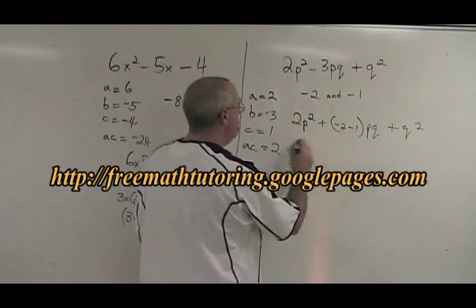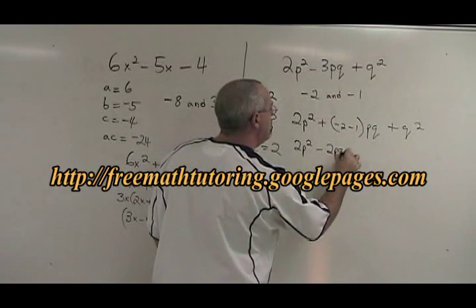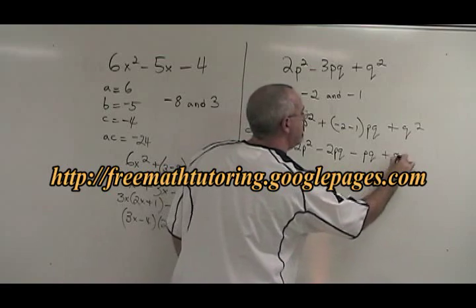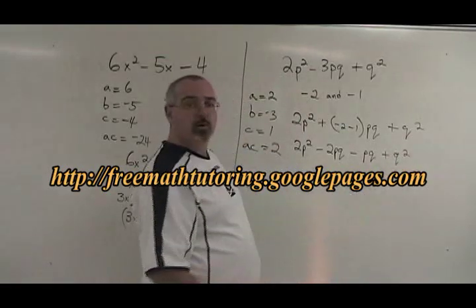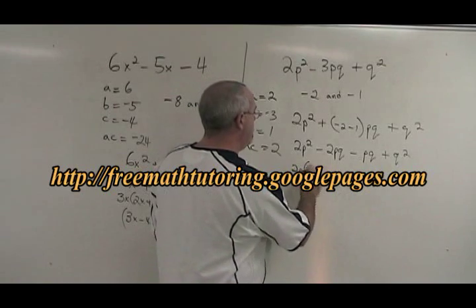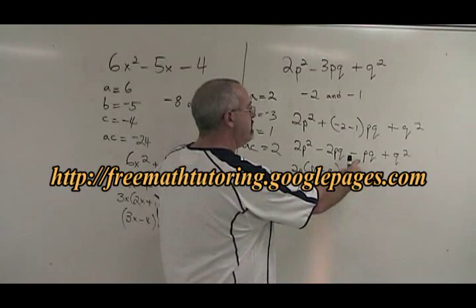We break our bracket up: 2p squared minus 2pq minus 1pq plus q squared, and now we do a grouping. The greatest common factor of these two is 2p, so we factor out a 2p and we get p minus q in the bracket.